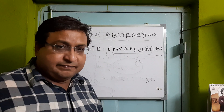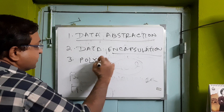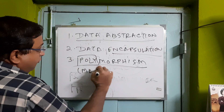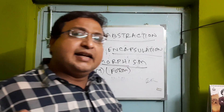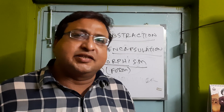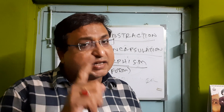Next we come to polymorphism. Poly means many, morph means form. At home you are a good child, in school you are a good student, in the neighborhood you are a good neighbor, and among friends you are a good friend. You are one person but play different roles in different cases. This is called polymorphism — one function or component used for different purposes. They have a common name but serve different purposes.